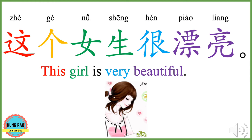这个女生很漂亮。 这个 means this. 个 is the most commonly used measure word in Chinese. 女生 means girl. 很 means very. 漂亮 means beautiful or pretty. 这个女生很漂亮 means this girl is very beautiful. Now you can try.